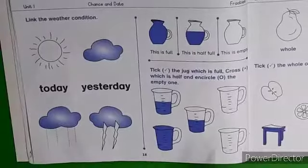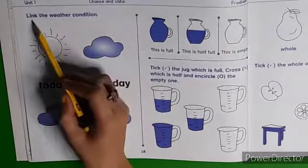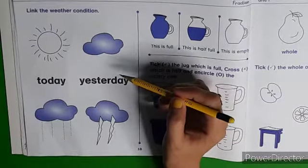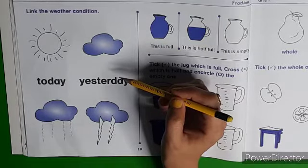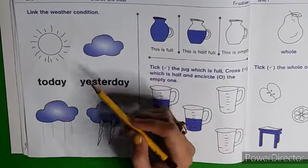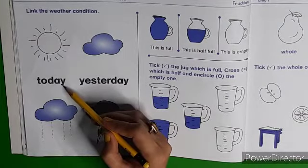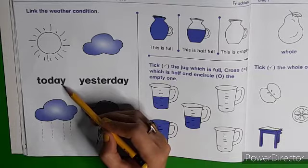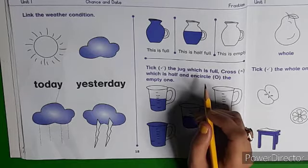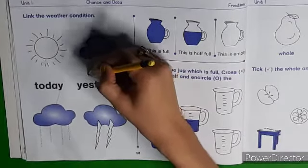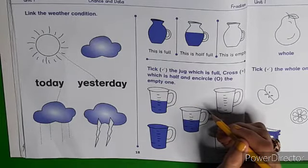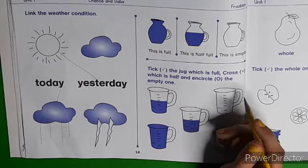Now come to the next page — Link the weather condition. यहाँ पर बच्चों हमने weather को link करना है — आज कौन सा मौसम है? How is the weather today? Today is a Rainy day — now match today with rain. How was the weather yesterday? It was sunny — now match. Today our lesson is finished here. Stay home, stay happy. Allah Hafiz. I'll see you next time.